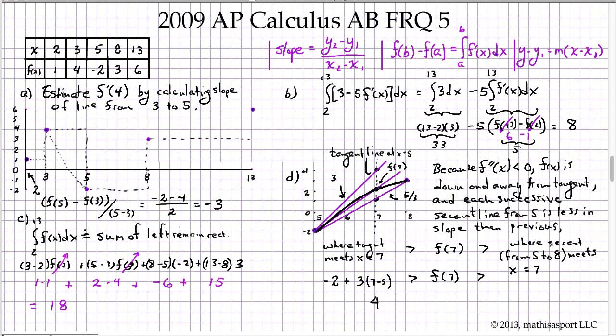Similarly, this secant line, where does it meet x equals 7? Well it starts out here at a height of -2, and it goes up by a slope of 5/3 over a distance of 7 minus 5. That's going to be 2 times 5/3, which is 10/3. -2 plus 10/3 is like -6/3 plus 10/3, and that's 4/3. So we've shown that f(7) has to fit in between 4 and 4/3.